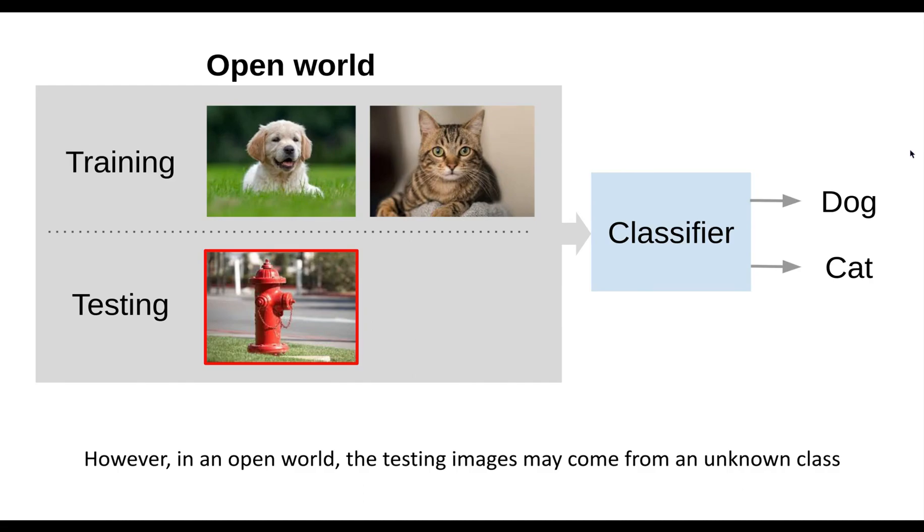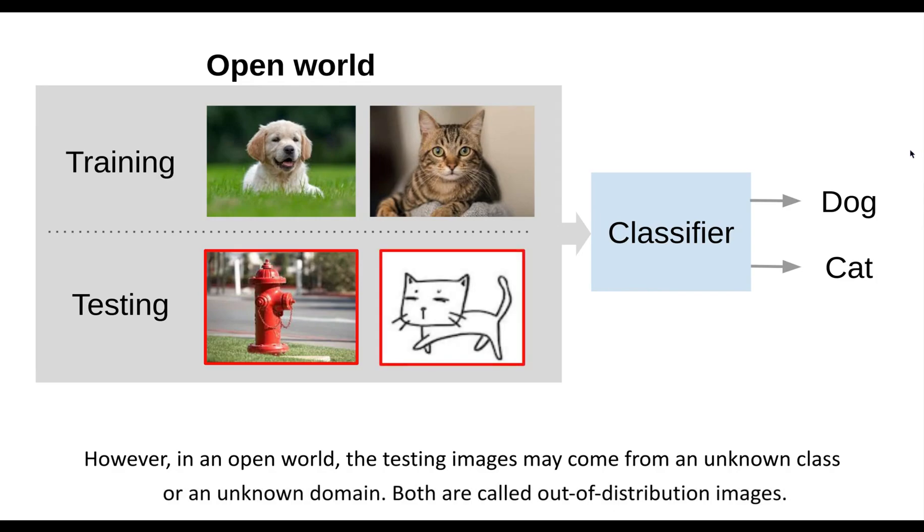However, in an open world, the testing images may come from an unknown class or an unknown domain. Both are called out-of-distribution images.